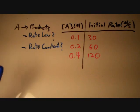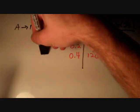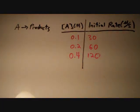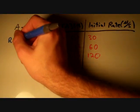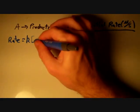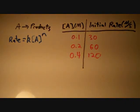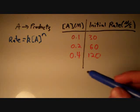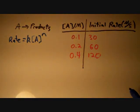We want to determine the rate law and the rate constant for this reaction. The expression for the rate law is: rate equals k times the concentration of A to the n power, where n is the order. We're trying to find the order of this reaction so that we can find the rate law.